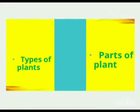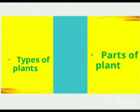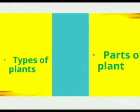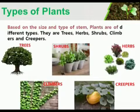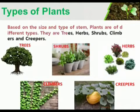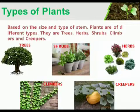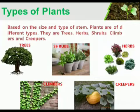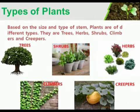In this lesson, we have two main parts. One is types of plants and second is parts of plant. Children, we all see beautiful green plants around us. Did you ever observe that they are of very different types and sizes? Some are very small, some are very big. So let us learn about the types of plants today.